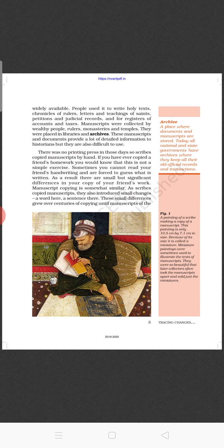Paper was easily available and people used to write holy texts, chronicles of rulers, letters and teachings of saints, petitions and judicial records, and registers of accounts and taxes. Manuscripts were collected by wealthy people, rulers, monasteries and temples. They were placed in libraries and archives.